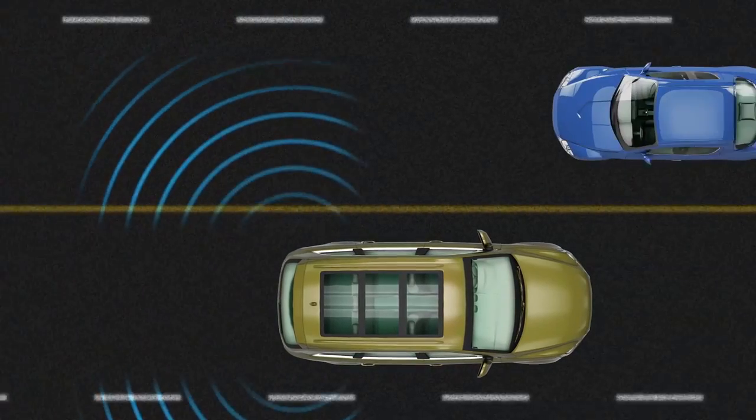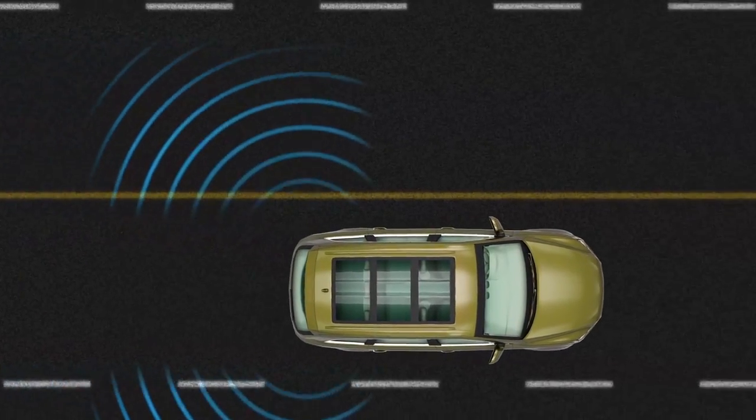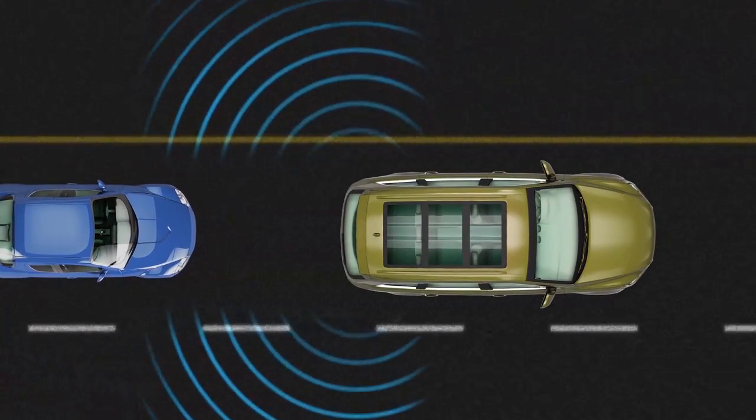The system will not provide a warning if the target vehicle is overtaken, if it approaches from the opposite direction in an adjacent lane, or if it approaches from behind in the same lane.